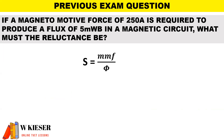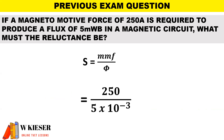If a magnetomotive force of 250 is required to produce a flux of 5 milliweber in a magnetic circuit, what must the reluctance be? MMF is 250. To convert milliweber into Weber we multiply by 10 to the power of minus 3. Therefore the reluctance will be 50,000 amps per Weber.